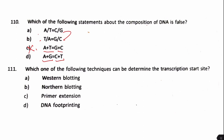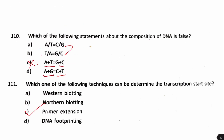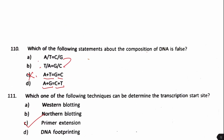Final question: which technique can be used to determine the transcription start site — Western blotting, Northern blotting, primer extension, or DNA footprinting? The answer is primer extension, as it uses a primer to identify where transcription begins. Answer: option C. This concludes the molecular biology questions from the 2014 and 2015 papers. The next part will be covered in the next video.